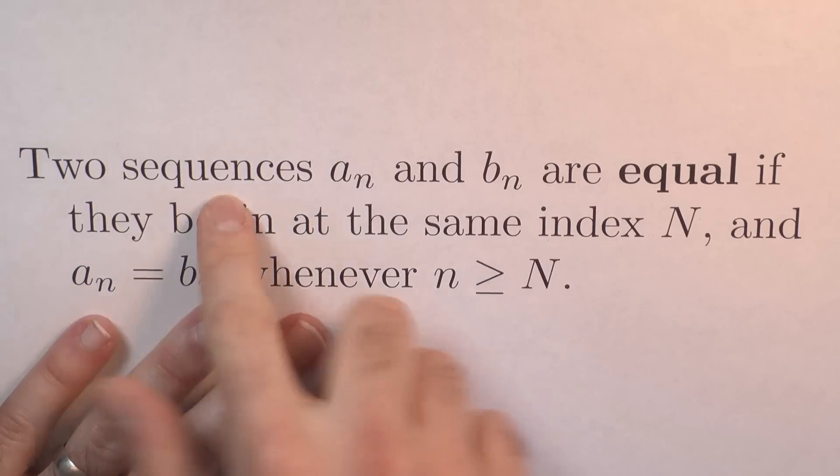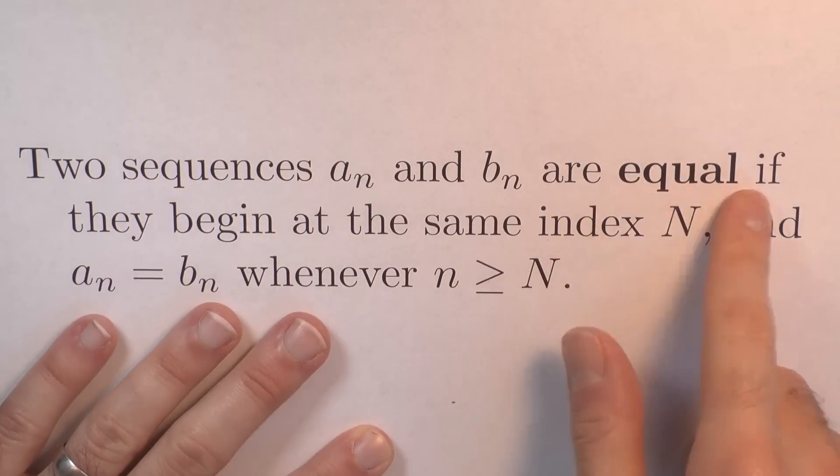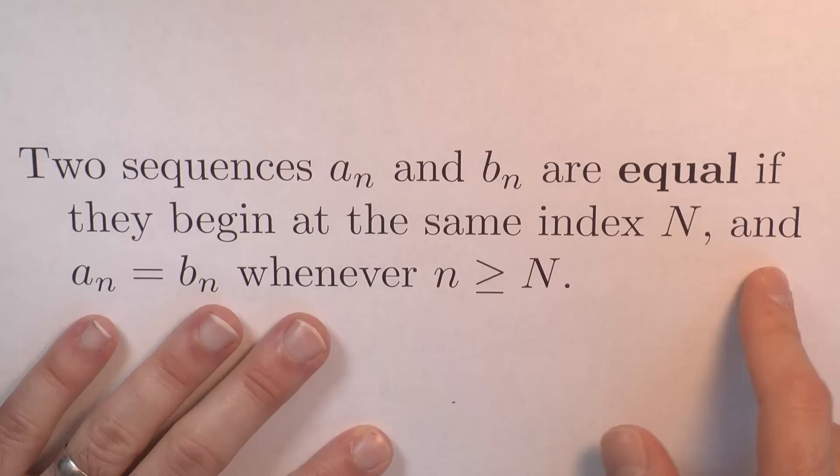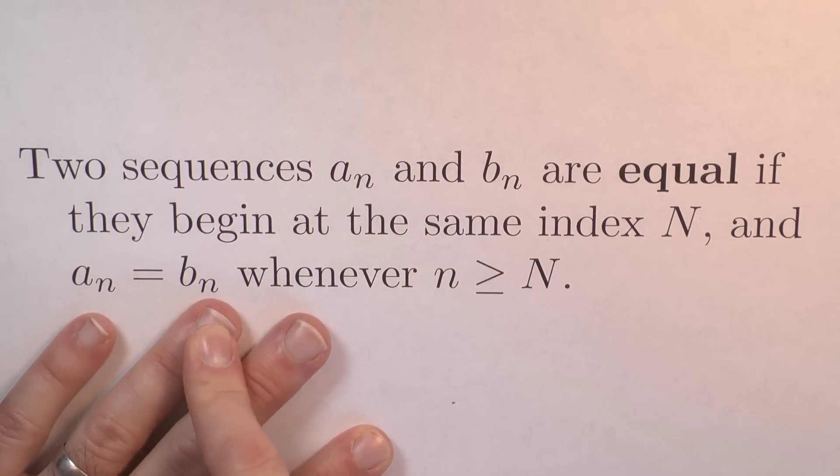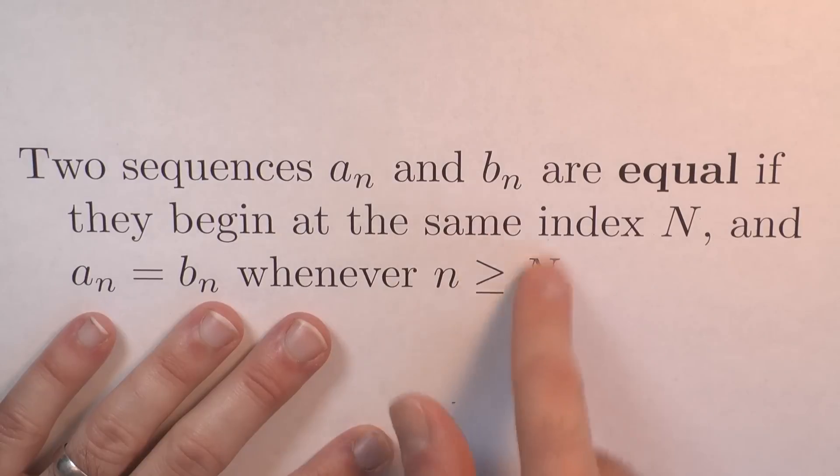When are two sequences the same? Two sequences, A and B, are equal. They're the same if they start at the same index, which I'll call big N, and corresponding terms are the same. So that A sub n equals B sub n whenever n is bigger than or equal to that starting index.